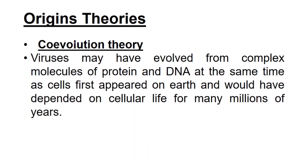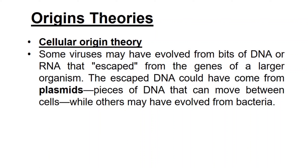The co-evolution theory proposes that viruses may have evolved from complex molecules of protein and DNA at the same time as cells first appeared on Earth, depending on cellular life for many millions of years. The cellular origin theory suggests that some viruses may have evolved from bits of DNA or RNA that escaped from the genes of a larger organism, possibly from plasmids — pieces of DNA that can move between cells — while others may have evolved from bacteria.